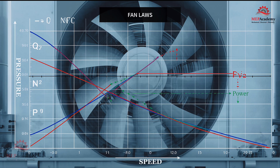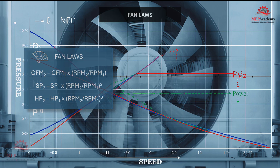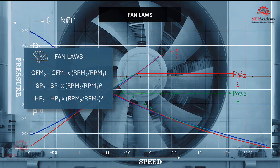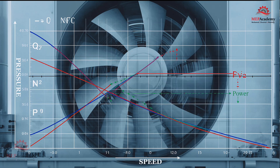Before we dive into the options, let's remember the fan affinity laws. Airflow is proportional to speed. Pressure goes with the square of speed, and power goes with the cube of speed. That means a small reduction in fan speed creates a huge reduction in power consumption.